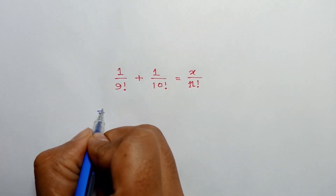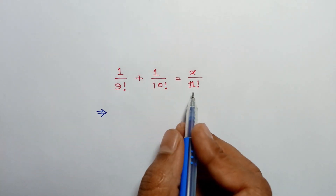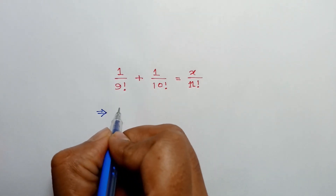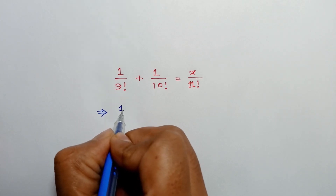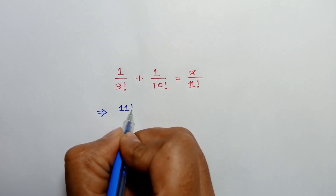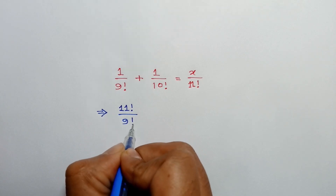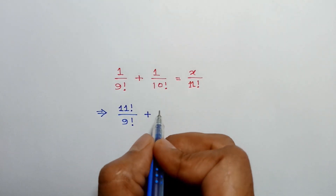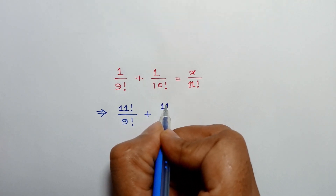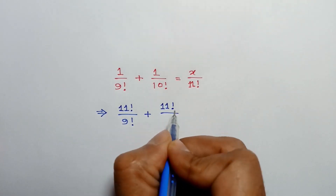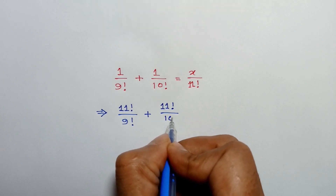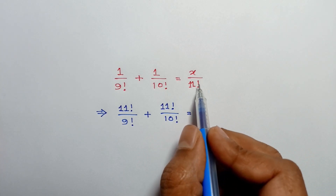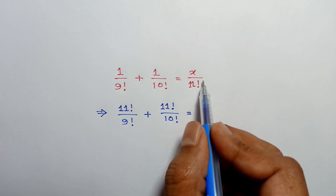Multiplying both sides by 11 factorial, we can write: n times 11 factorial over 9 factorial plus n times 11 factorial over 10 factorial is equal to 11 factorial over 11 factorial, which will cancel out.